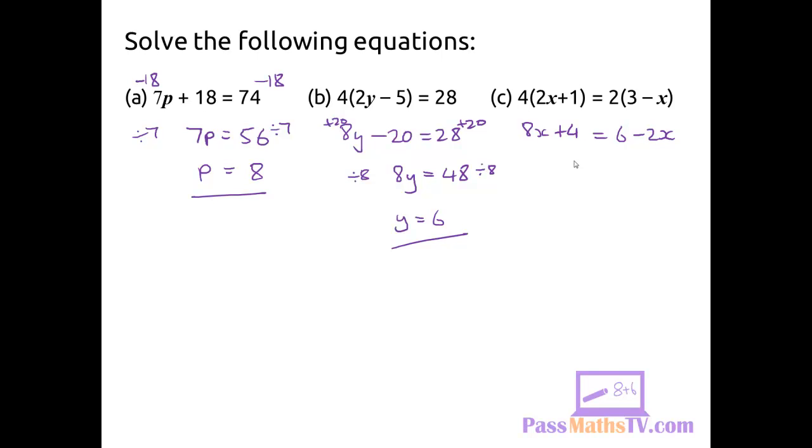you'll have less negative numbers to worry about in the question. So I'm going to get rid of this minus 2x by adding 2x to both sides. I end up with 10x plus 4 is equal to 6.